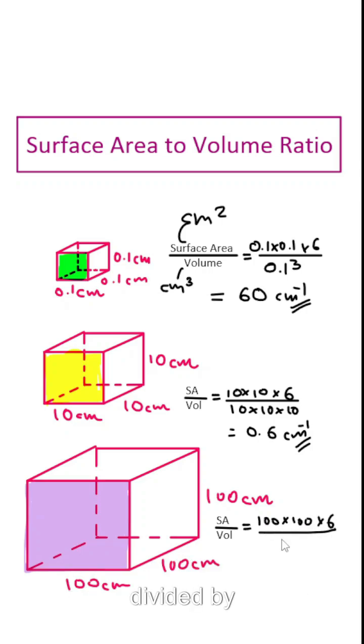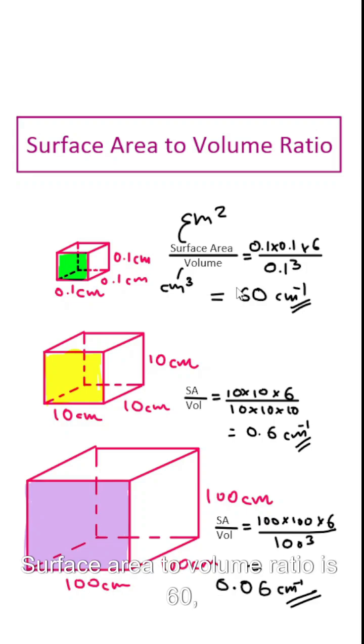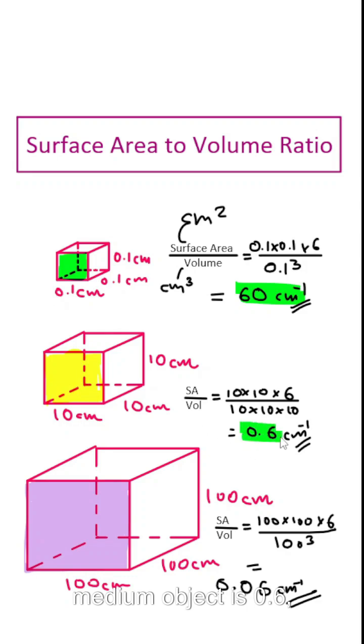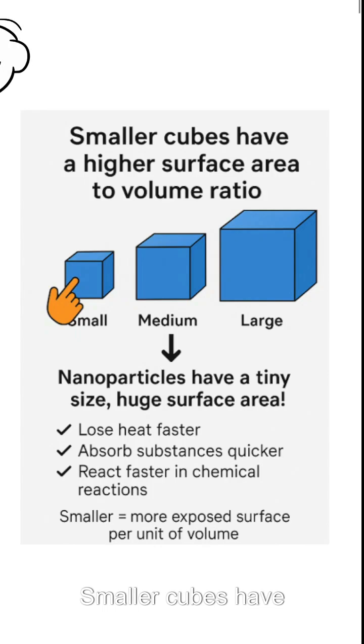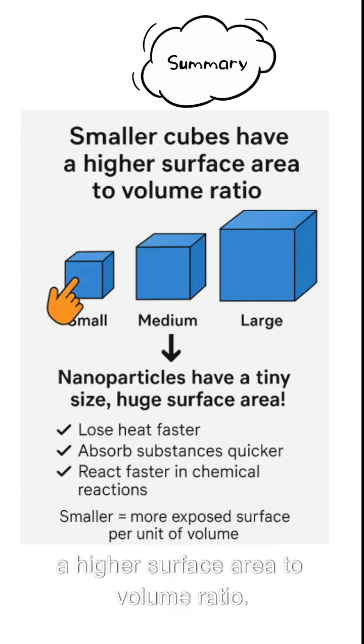For the small object, surface area to volume ratio is 60. Medium object is 0.6, large object is 0.06. Smaller cubes have a higher surface area to volume ratio.